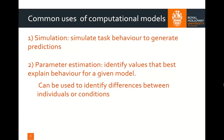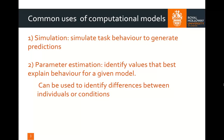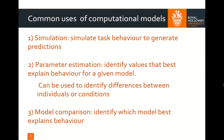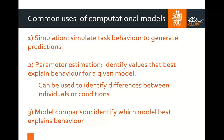Another use is parameter estimation, and this refers to those free parameters I mentioned a moment ago. By using parameter estimation, we can identify values that best explain behavior for a given model. This is really important because we can use these parameters to predict certain behaviors or identify individual differences or differences between conditions, and this can be informative for understanding certain things underlying behavior. And then finally, we also have model comparison, which is where we try to identify the model that best explains behavior. This is important in some research areas because there are many models that can explain a single task, and by finding out which model best explains behavior, we can get a finer-grained understanding of that particular task.